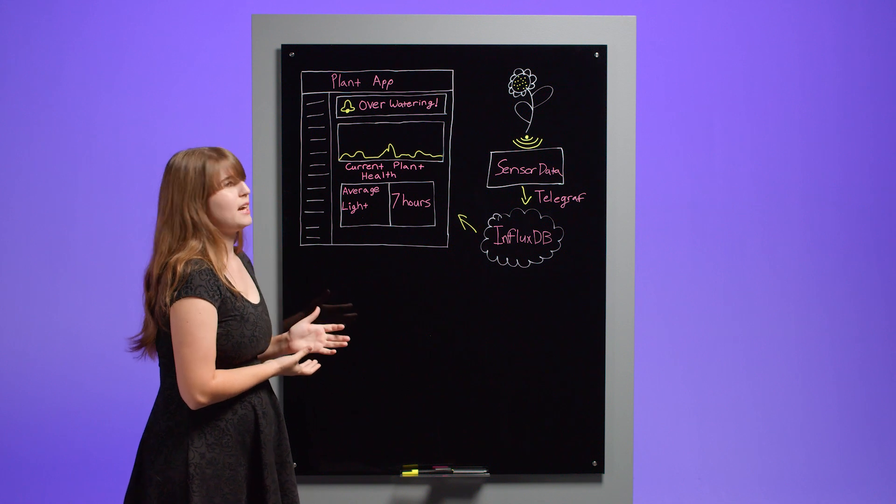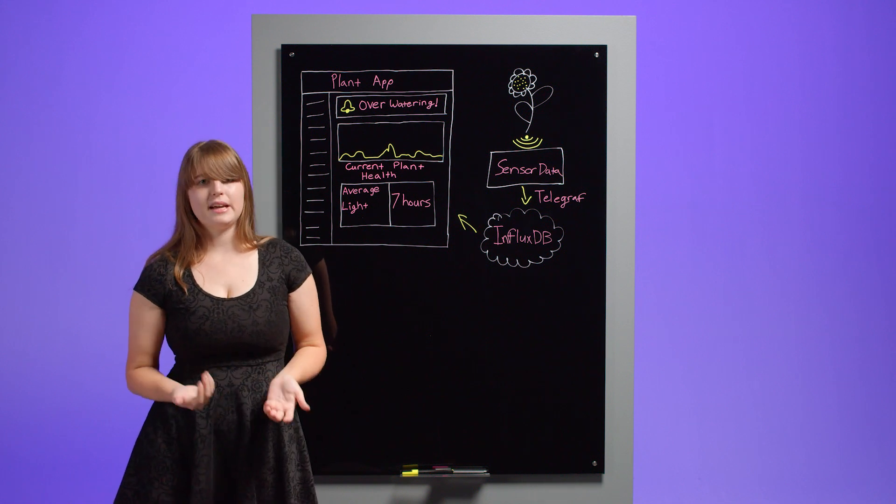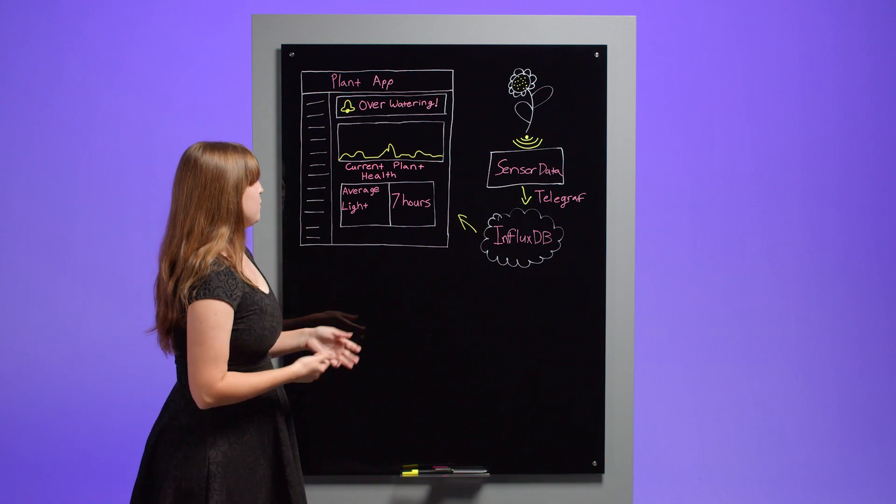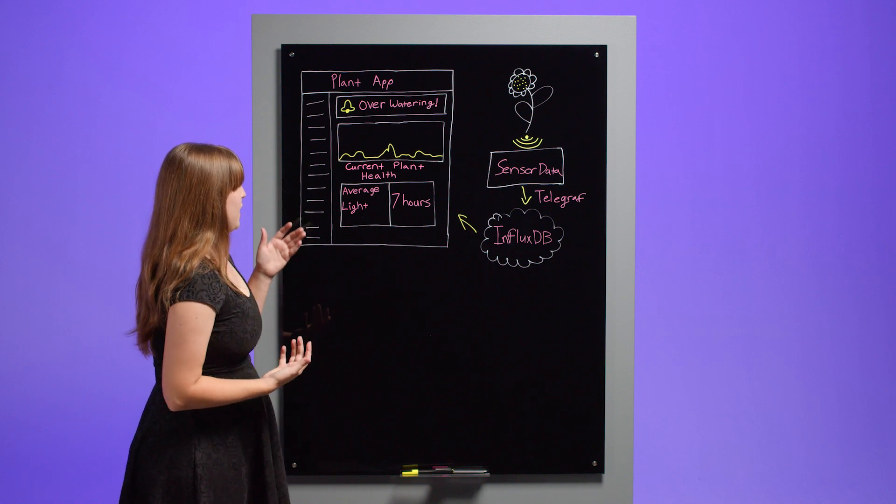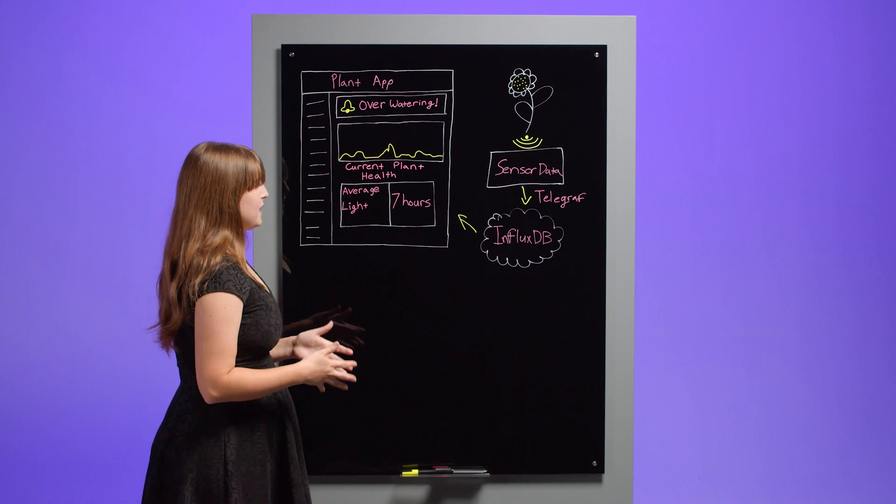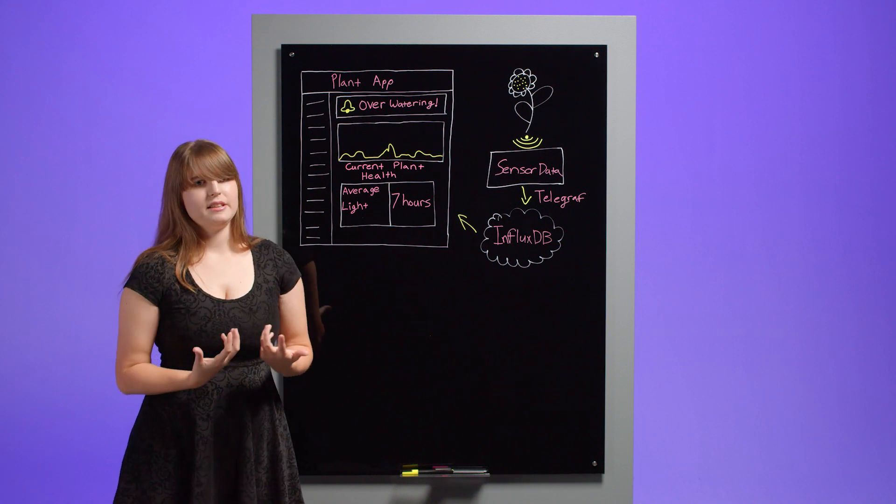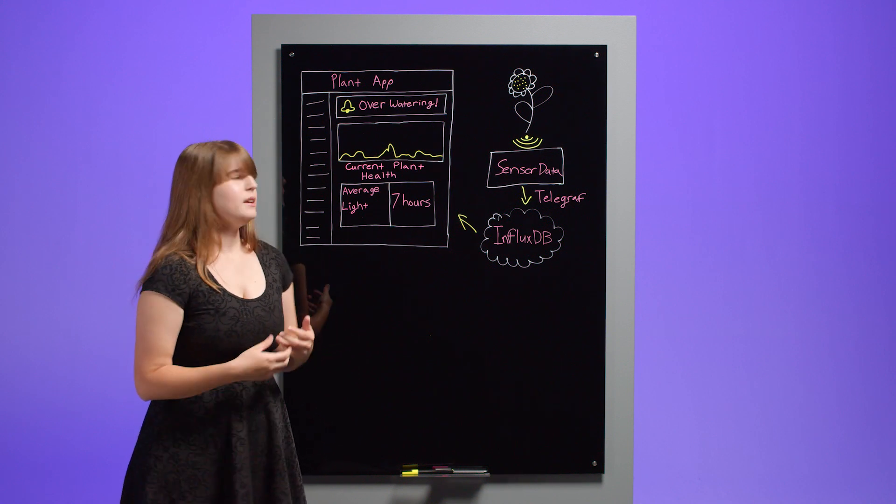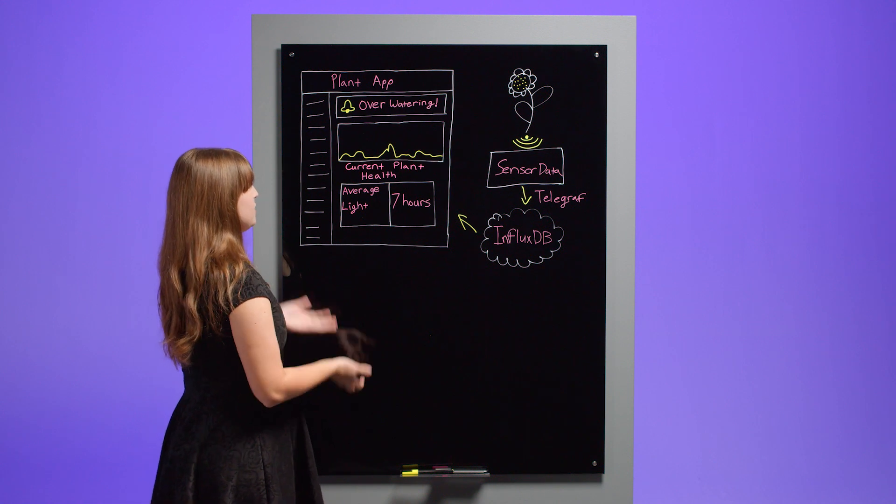Since Influx is made for time series data, it can also downsample that collected data. With downsampling, I can get an average. So I can do it over a day, over multiple days, and basically I can get rid of some of the more granular data that I don't really need to hold on to. And that makes my application a lot lighter.